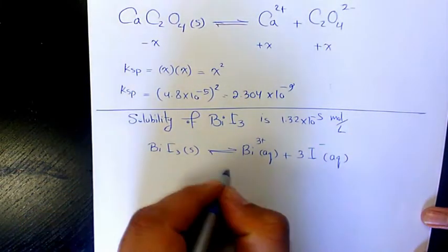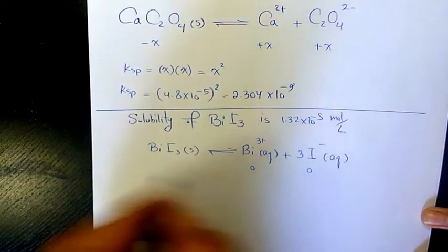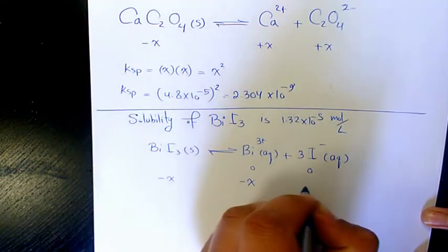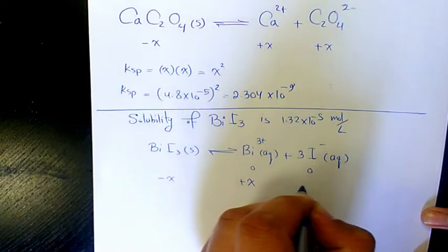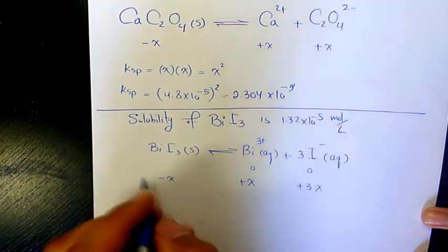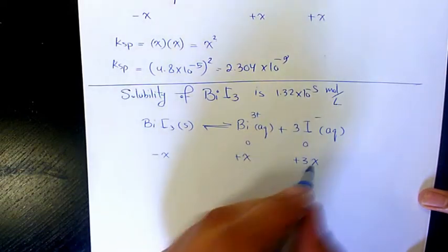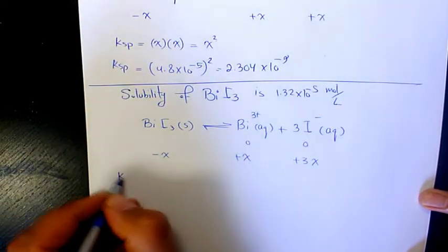Change will be negative X, negative X, positive X, positive X, and 3X here. So we will have X and 3X here.